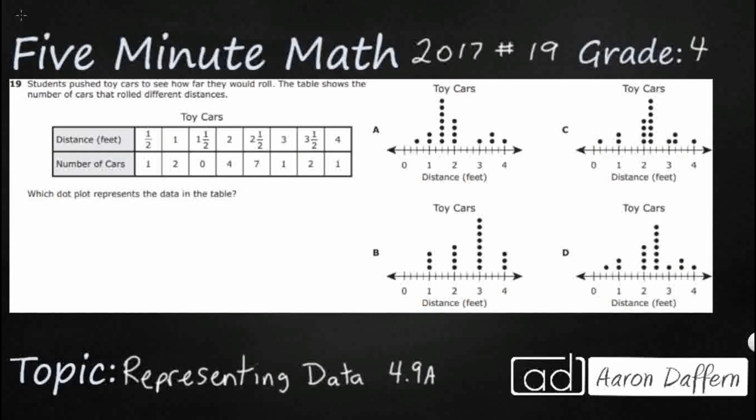So we have a table here showing how far cars are rolling and we've got distance in feet all the way up from half a foot up to four feet in length. And so we need to find a dot plot—those are our answer selections A, B, C, or D—that best represents that information.